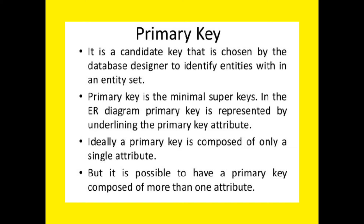In an ER diagram, the primary key is represented by underlining the primary key attribute. Ideally, a primary key is composed of only a single attribute, but it is possible to have a primary key composed of more than one attribute. One table can have only one primary key. The properties valid for a primary key include: it uniquely identifies each record, must contain unique values, cannot contain null values, and each table should have only one primary key.